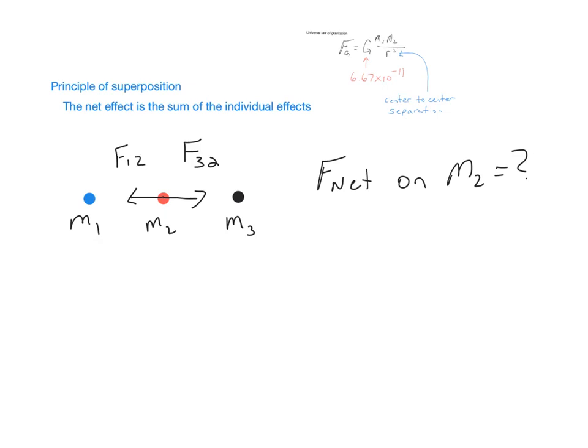So, there's no other object that mass 2 is interacting with. So, we've identified all the forces. Now, it's a simple vector math problem, which is the force of 3 on 2 minus the force of 1 on 2. And that will give you your answer.